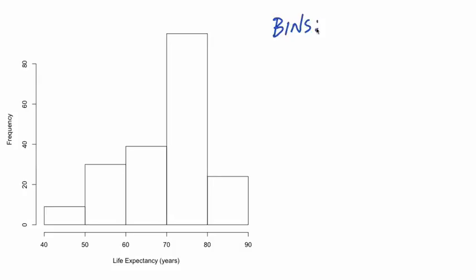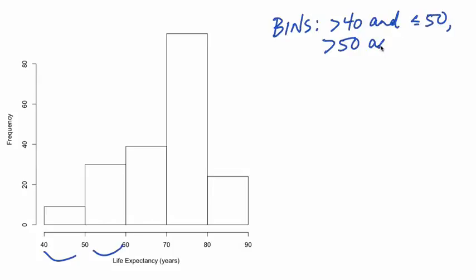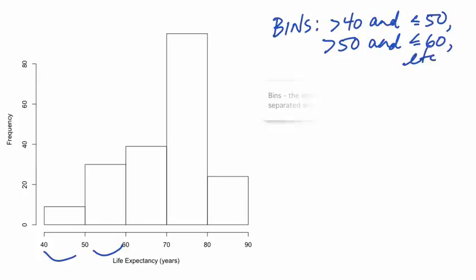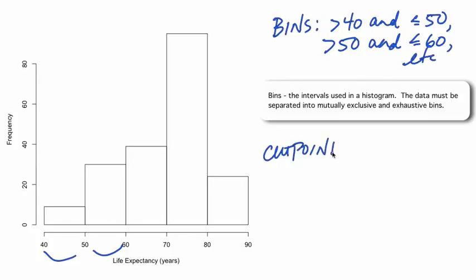The first bin includes countries with life expectancies at least 40 but less than or equal to 50. The second bin includes countries with life expectancies at least 50 but less than or equal to 60, and so on. The cut points are the values that define the bins — in this case 40, 50, 60, 70, 80, and 90.